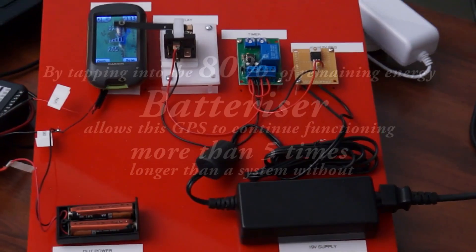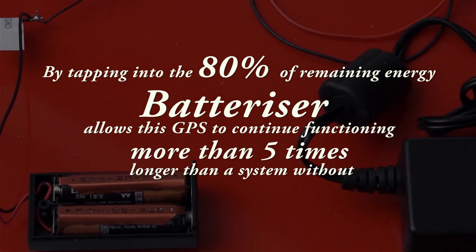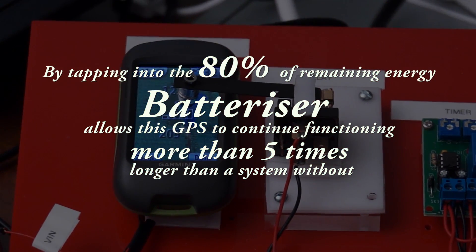By tapping into the 80% of the energy that could have otherwise been thrown away, the batterizer allows this GPS to continue functioning more than five times longer than a system without.